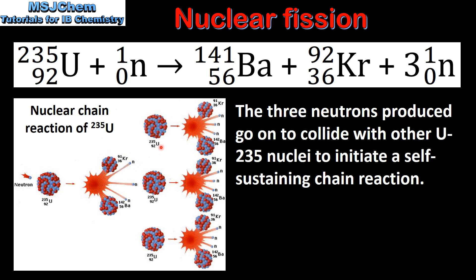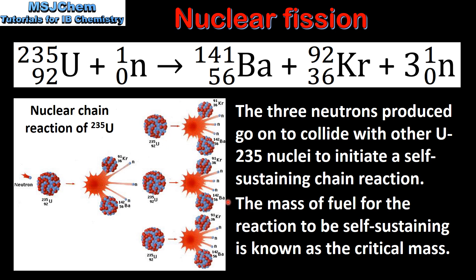These neutrons go on to collide with other uranium-235 nuclei initiating a self-sustaining chain reaction. The mass of fuel for the reaction to be self-sustaining is known as the critical mass.